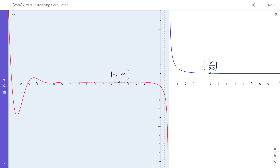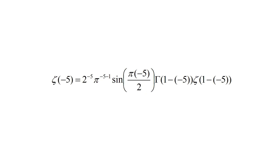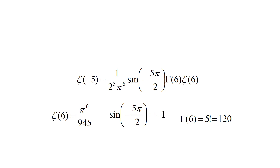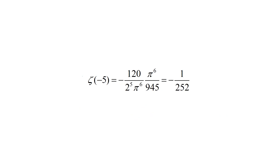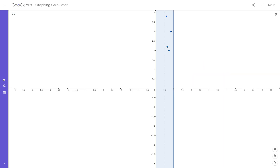But what is the analytic continuation value of the point zeta(−5)? Let's use the functional equation to find it. First, replace the variable s with the value −5. Now substitute pi to the 6 over 945 for zeta(6), −1 for sine of minus 5pi over 2, and 120 for gamma(6). We get zeta(−5) equal to minus 1 over 252. I'm showing you this so you can visualize the formula, and also so you can see that every value of the zeta function right of the critical line has a corresponding counterpart left of the critical line, with the same value multiplied by some other value.